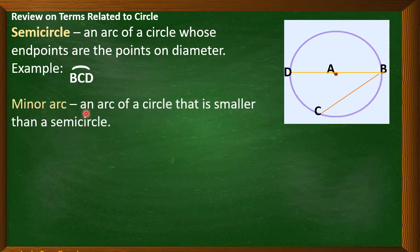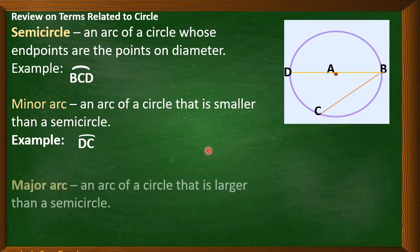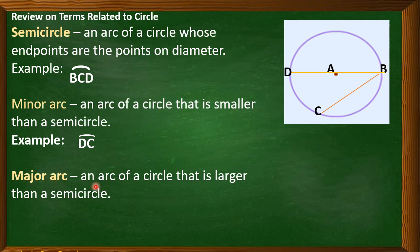Next, minor arc. Minor arc is an arc of a circle that is smaller than a semicircle. If this is our semicircle, then we can have arc DC as our example or arc CD for minor arc. We can also have arc CB. We also have major arc. A major arc is an arc that is larger than a semicircle. In here, we can have arc D from this point, then going here, B and C. Or C, B, D. Major arc.